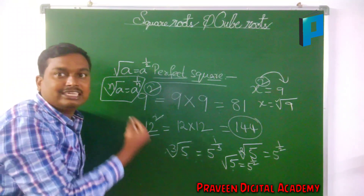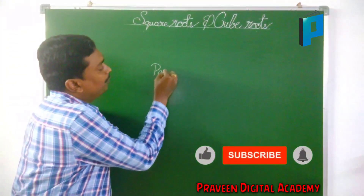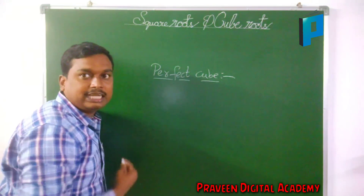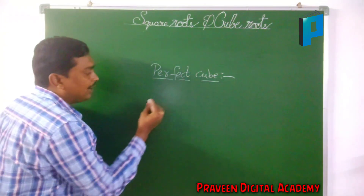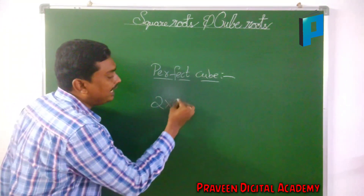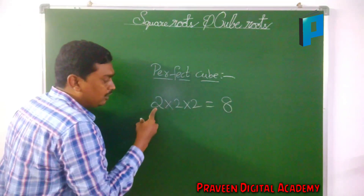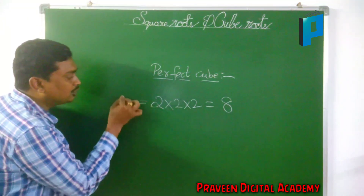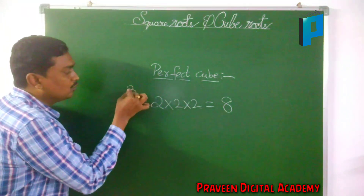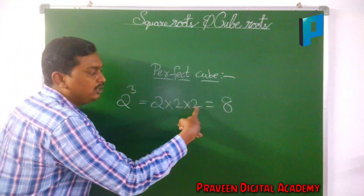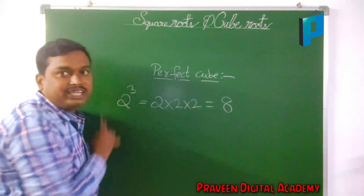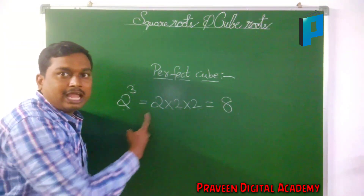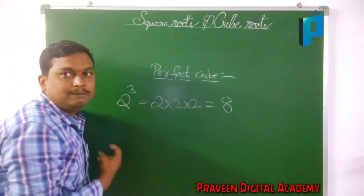Now let us go to the perfect cube. A perfect cube is nothing but multiplying any number 3 times — we say it as a perfect cube. For example, if you are having 2, multiplied 3 times it gives 8. This can be written as 2 power 3, which equals 2 into 2 into 2, which equals 8. If you are having 3 on the power, we can say it as 2 cube.